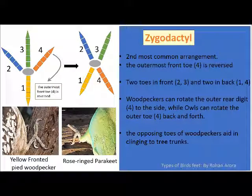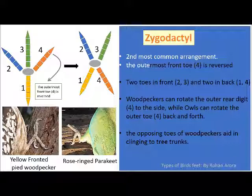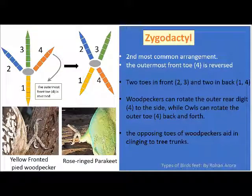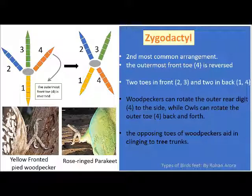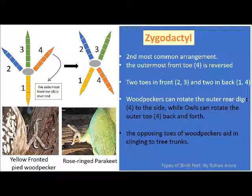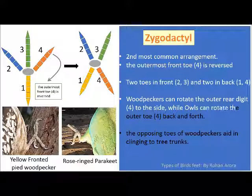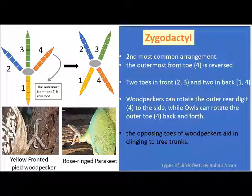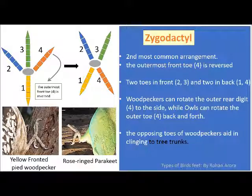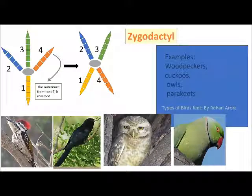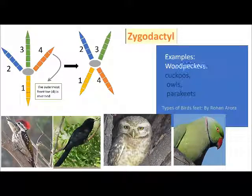Zygodactyl is the second most common arrangement. The outermost fourth digit is reversed: two toes in the front, marked as 2 and 3, and two at the back, marked as 1 and 4. Woodpeckers can rotate the fourth digit to the side, while owls can rotate the fourth digit back and forth. The opposing toes of woodpeckers aid in clinging to tree trunks. Examples of zygodactyl arrangement are woodpeckers, cuckoos, owls and parakeets.